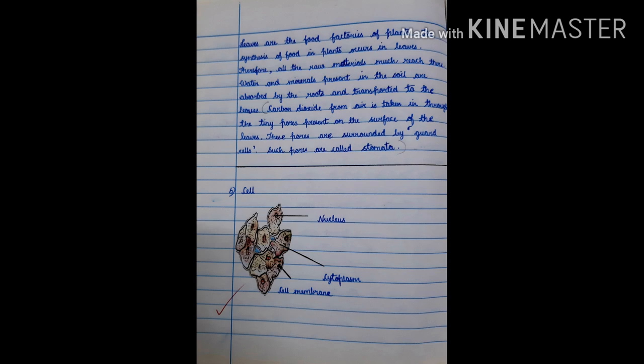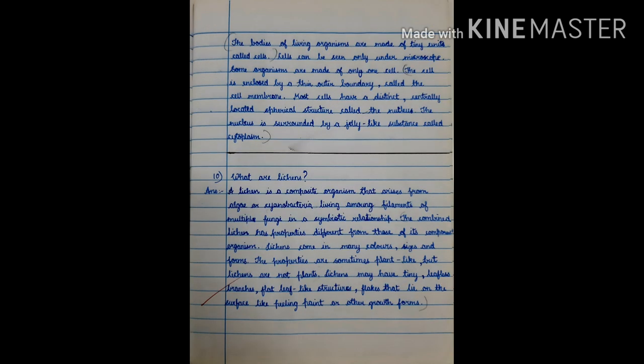This is the diagram of cell. The bodies of living organisms are made of tiny units called cells. Cells can be seen only under microscope. Some organisms are made of only one cell. The cell is enclosed by a thin outer boundary called the cell membrane. Most cells have a distinct centrally located spherical structure called the nucleus. The nucleus is surrounded by a jelly-like substance called cytoplasm.